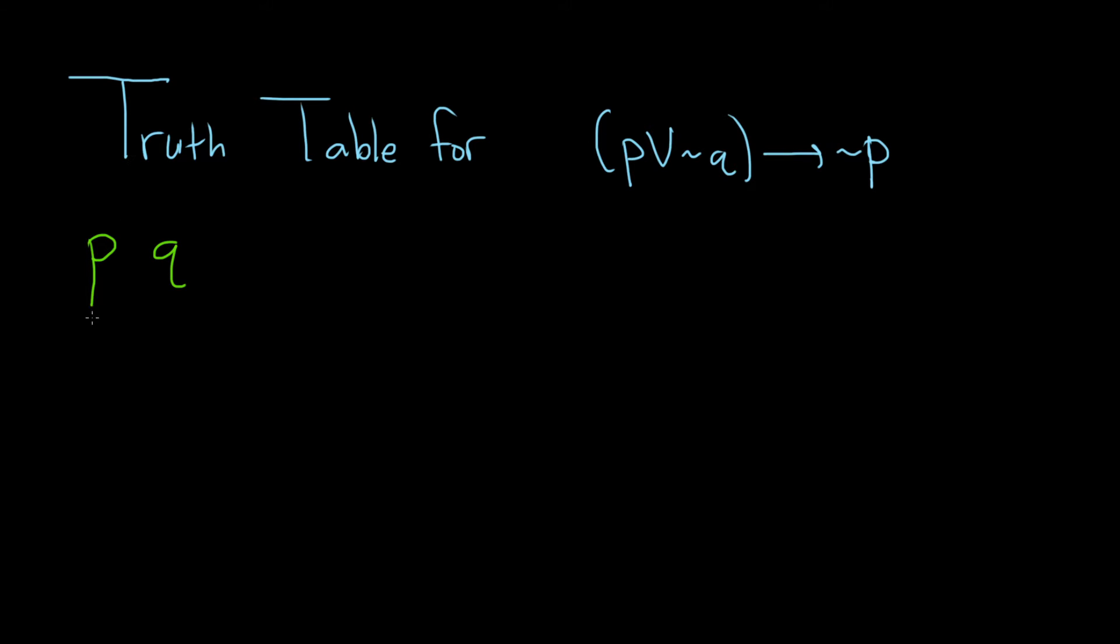And so a good first case is when they're both true. So true, true. Another case is when exactly one of these is false. So true and false. Then another case would be when the first one is false and this one is true. And the last case would be when they're both false. So false, false.